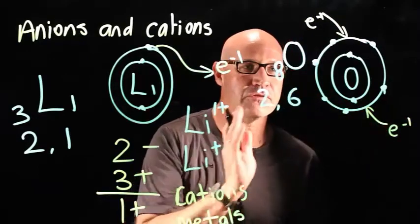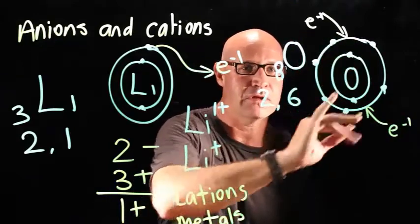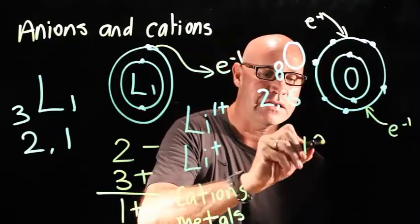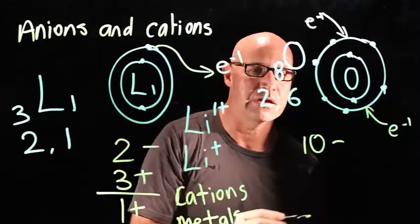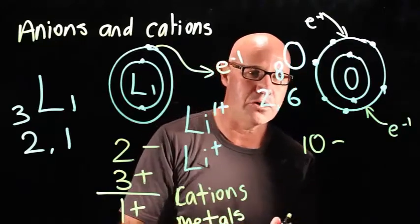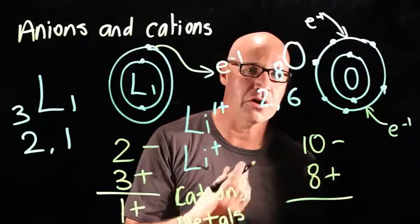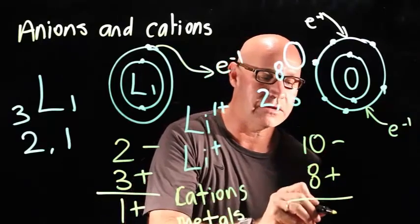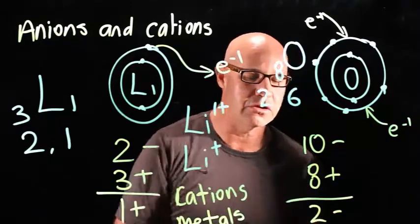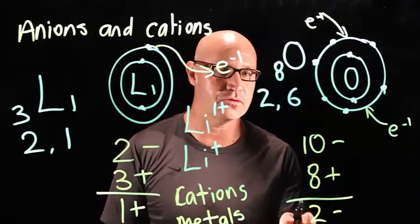So if it receives two more electrons to have a full outer shell, it then has ten electrons in total. Only eight protons, eight positives. So what's the overall charge? There's two more negatives than there is positive. So it has an overall charge of two minus.